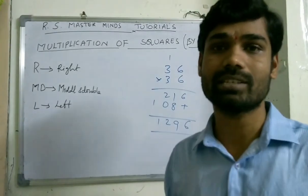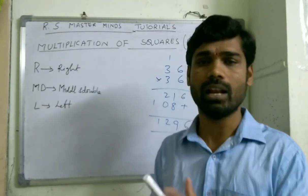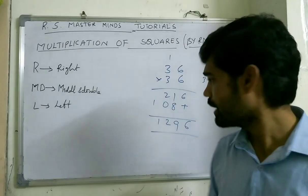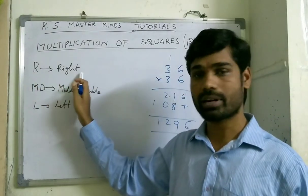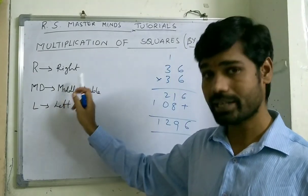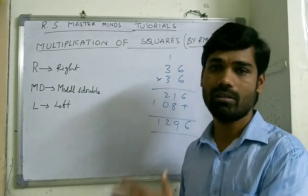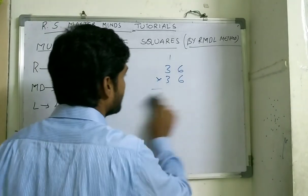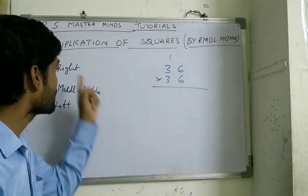Instead of this, how can we solve it in a single step? How can we do it in an easy way? Today we are going to discuss that. So what is R and DL? Once you remember the concept, every time you can solve it very easily. R stands for Right, MD stands for Middle and Double, and L stands for Left.